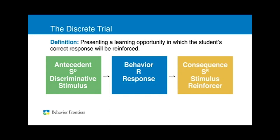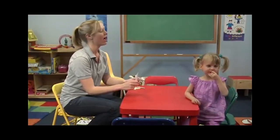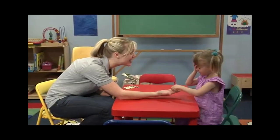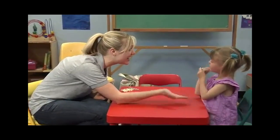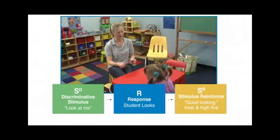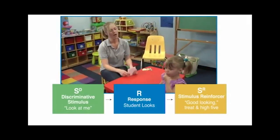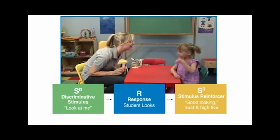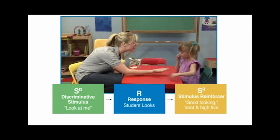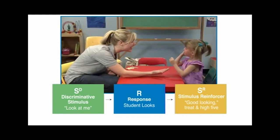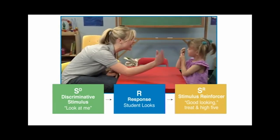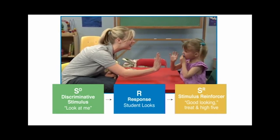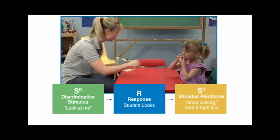In DTT, the discrete trial is used to teach new behaviors. The discrete trial consists of three parts corresponding to the ABCs of behavior: the discriminative stimulus (SD), the response (R), and the stimulus reinforcer (SR). Here's an example: the SD is the instructor saying 'Look at me.' The response is the student looking at the instructor. The stimulus reinforcers are the instructor saying 'Good looking,' giving a food treat, and high-fiving the student.